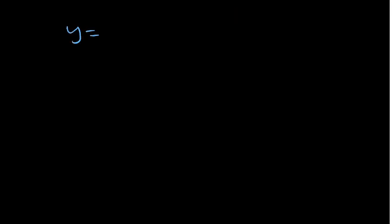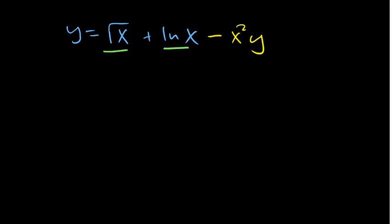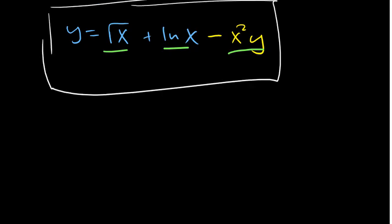For practice, differentiate y equal to the square root of x plus the natural log of x minus x squared times y. You've got three parts you can split into individual functions. Remember that the square root is the same as the power one half. After learning about the derivatives of logarithms and implicit differentiation, you should be able to answer this question — write it down and revisit it after watching the entire video.